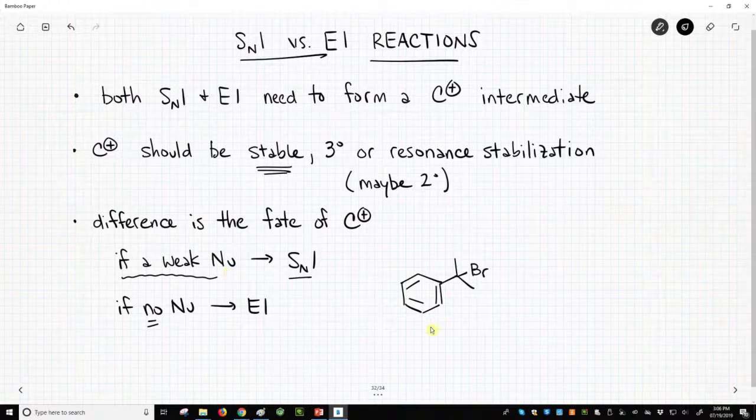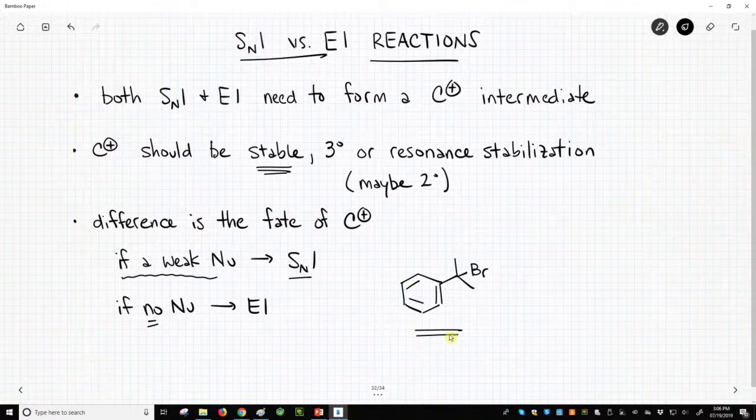So how would these look like? Here is a typical starting material. This is a nice highly substituted halide. It will form a nice highly substituted carbocation.